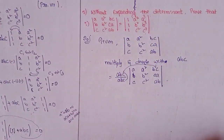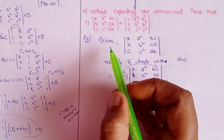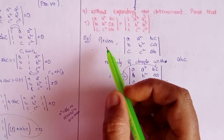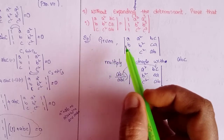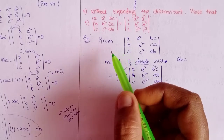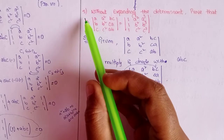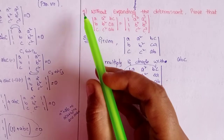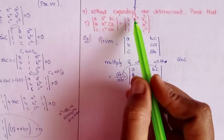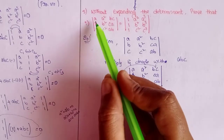Welcome to Learn Something More YouTube channel. Today we will discuss Intermediate First Year, Chapter 3: Matrices, Exercise 3D - Determinant Problems. Second Roman, fifth question: without expanding the determinant, prove that the following determinant equalities hold.